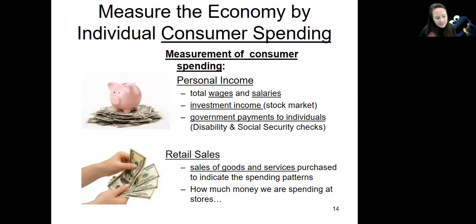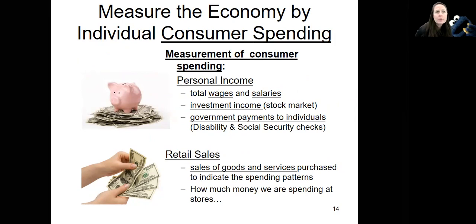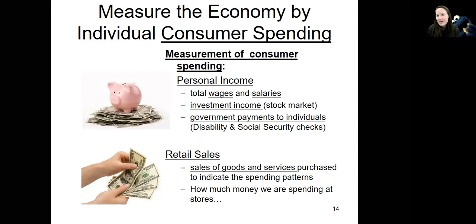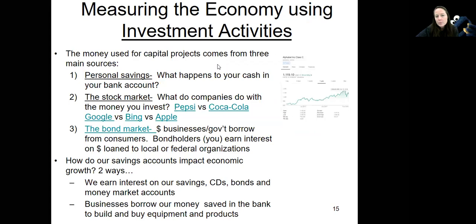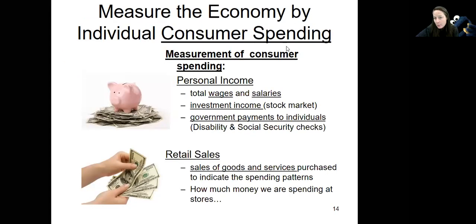Our investments also count toward personal income. If you've invested money in the stock market, in an IRA or retirement account, or bought bonds — all those things count. Also, if you're on disability or receiving a Social Security check, that's counted because that's money you're spending. Disability applies if you're unable to physically or mentally work. After a certain age — like my mom at 67 — you receive Social Security. She worked as a teacher for 30 years and now her monthly income is her retirement check and Social Security check. We also have retail sales — what we're spending, what we're buying.